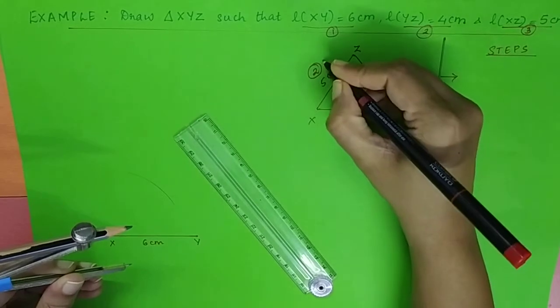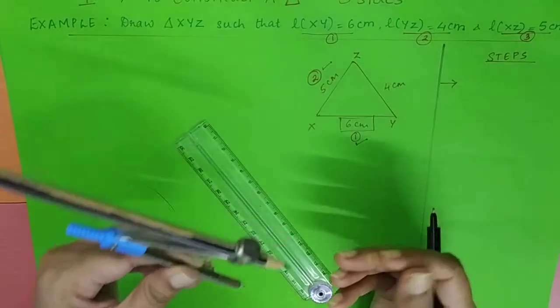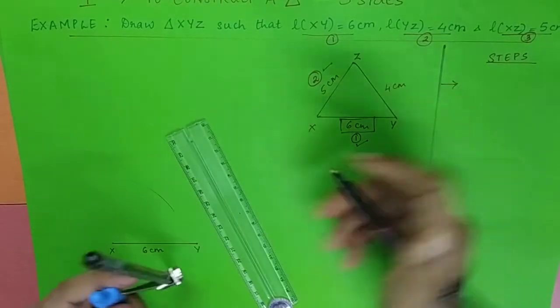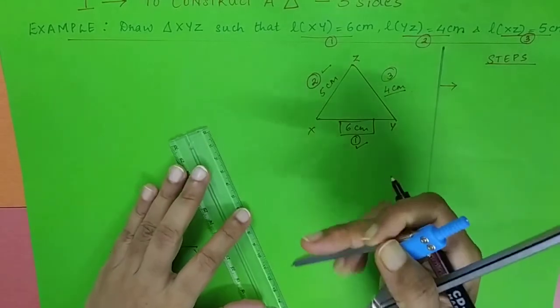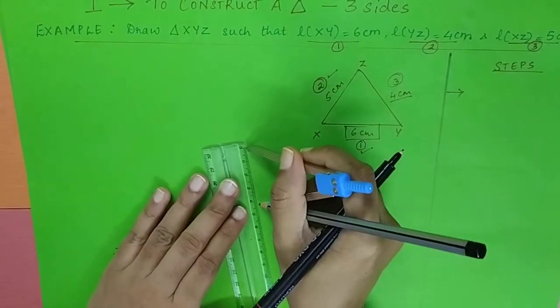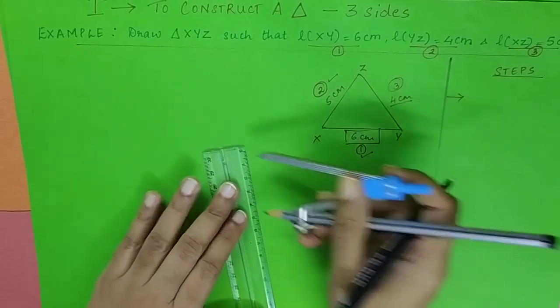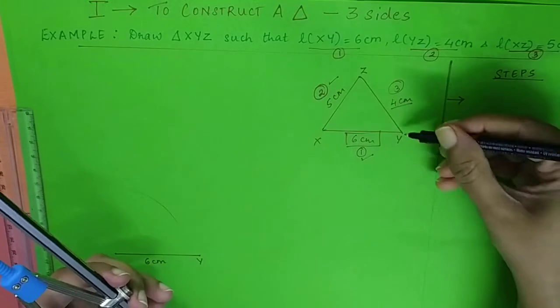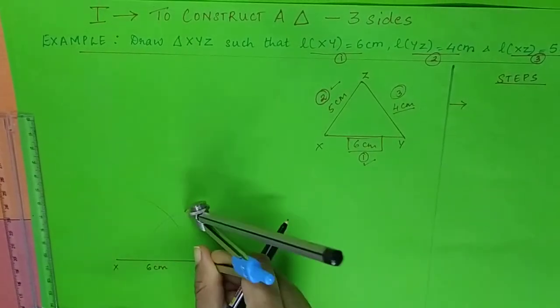I have finished with my second side. First step was to draw the base, second I took the 5 centimeters. Now the third side is of length 4 centimeters. Again, I'll take the scale, I will take a measurement from 0 to 4 onto my compass like this. This is YZ, so I place this pointer on point Y and mark an arc.